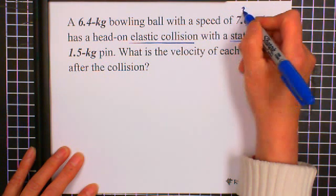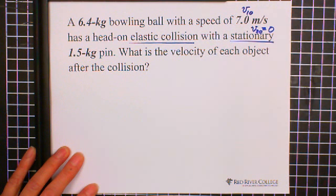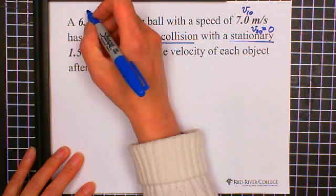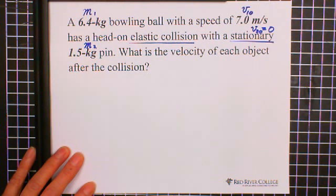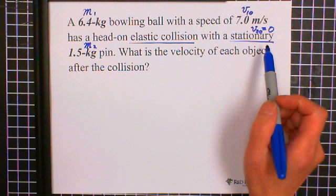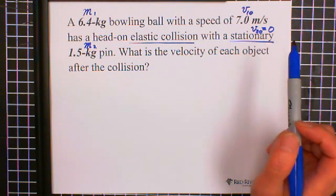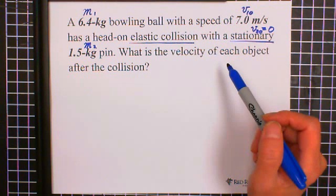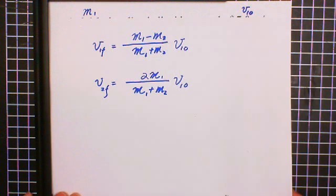And this is the first object, V1 initial. So this is M1, this is M2. Because this is elastic collision, with the second object pin stationary, velocity equals zero, that's why we can apply these two formulas. Because the total momentum is conserved, the total kinetic energy is conserved. So we have this formula.